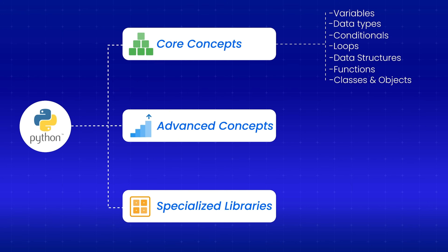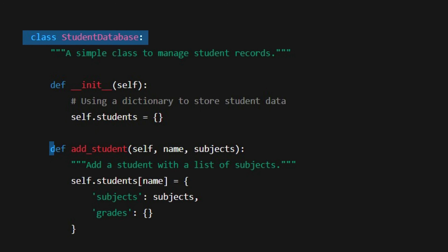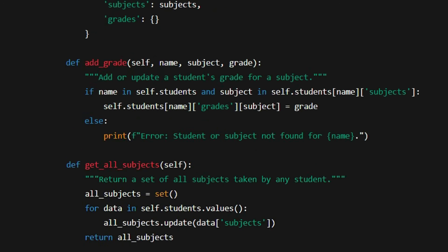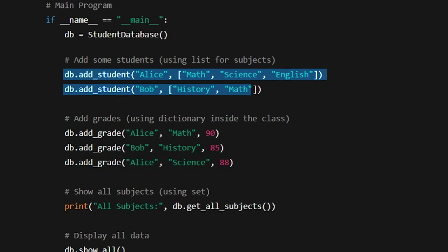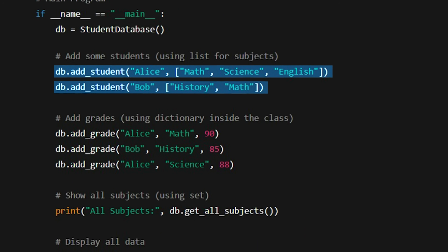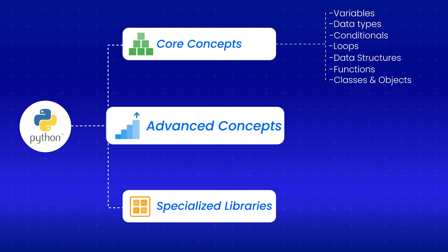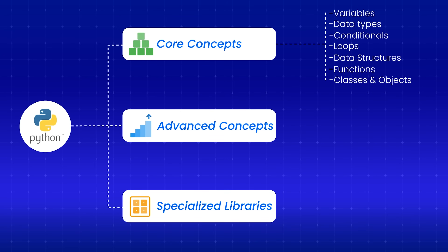That's it for the core concepts. If you can write a class, define methods, and use Python's built-in data structures, you have covered the fundamentals. Now, here is what separates beginners from people who actually get hired: advanced software engineering concepts.